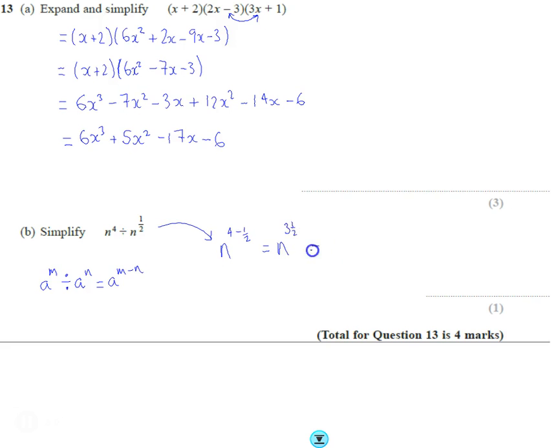So we can turn this into a fraction. 3.5, we tend to not write decimals as powers, we tend to write those as fractions. So if you write this not as a mixed number but as an improper fraction, n to the power of 7 over 2.